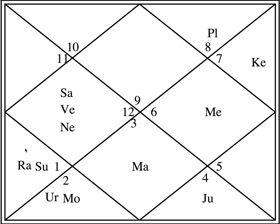Now come to number 5 — the fifth house is ruled by number 1 which is Aries, ruled by Mars. Where is Mars placed? Mars is placed here. Counting: 1, 2, 3, 4, 5, 6, 7 — so Mars is in the seventh house in sign number 3 which is Gemini. Don't confuse — it is not house number 3, it is house number 7. It is sign number 3. So the fifth lord Mars is sitting in the seventh house in the sign of Gemini.